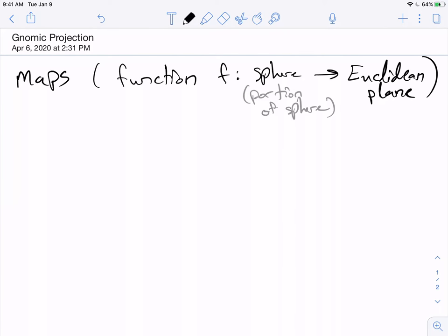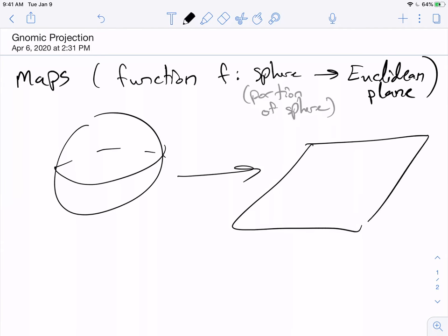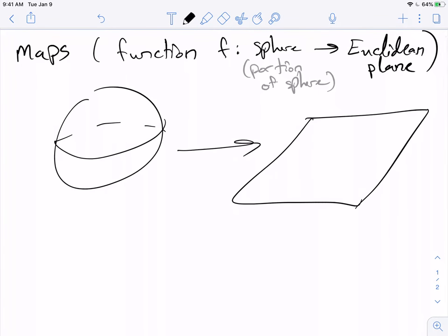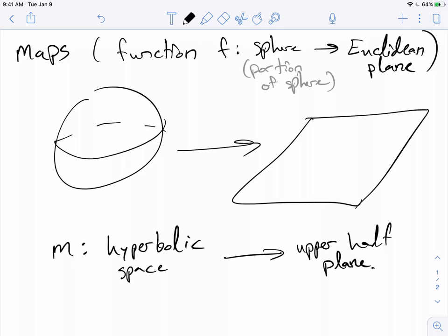I'm calling this a map because if you have a function from a sphere to a piece of the Euclidean plane, a flat piece of paper, that looks like a map. That's really what a map is. It's a function like this. We've already spent a lot of time talking about one particular map, which is not a map of the sphere, but a map of hyperbolic space.